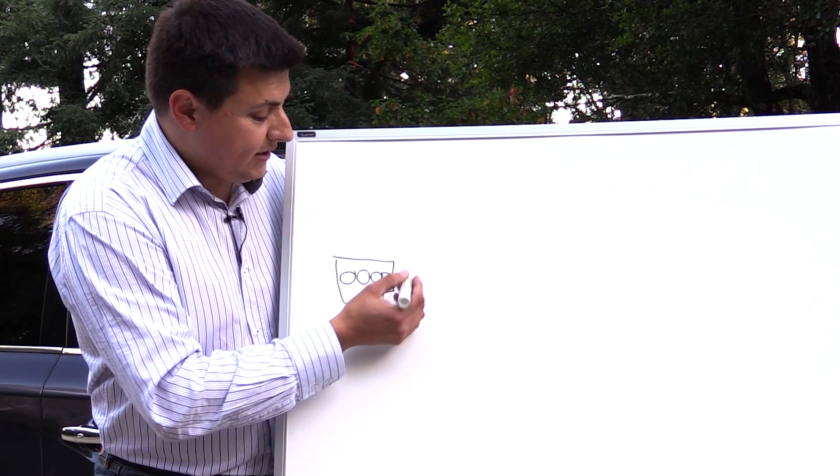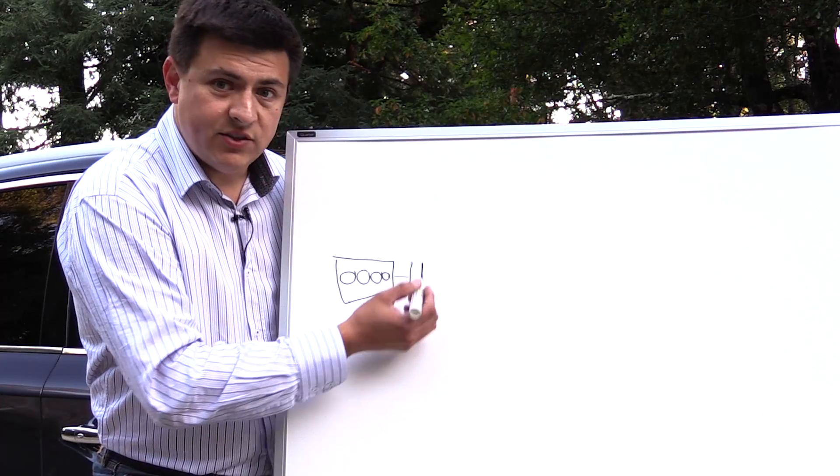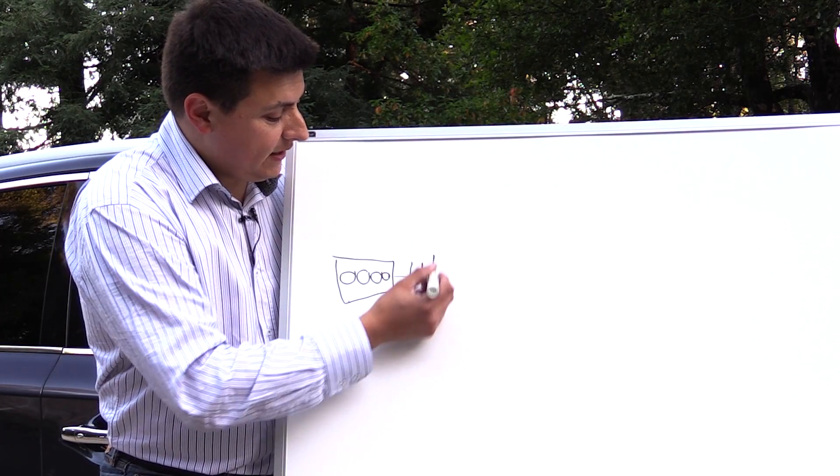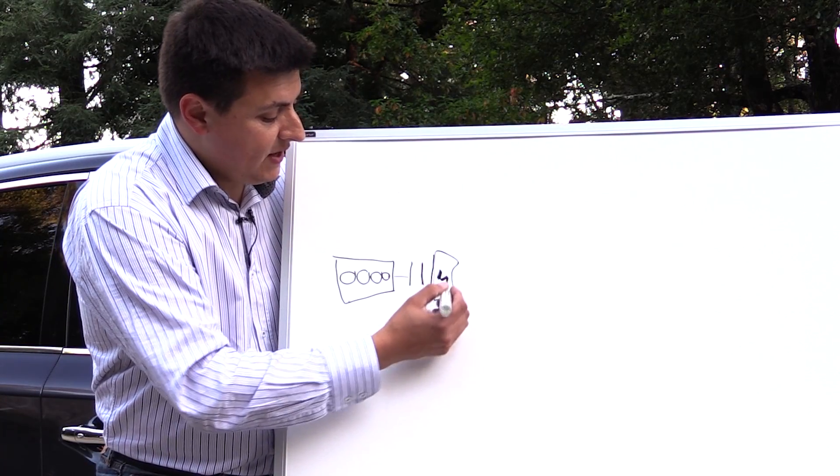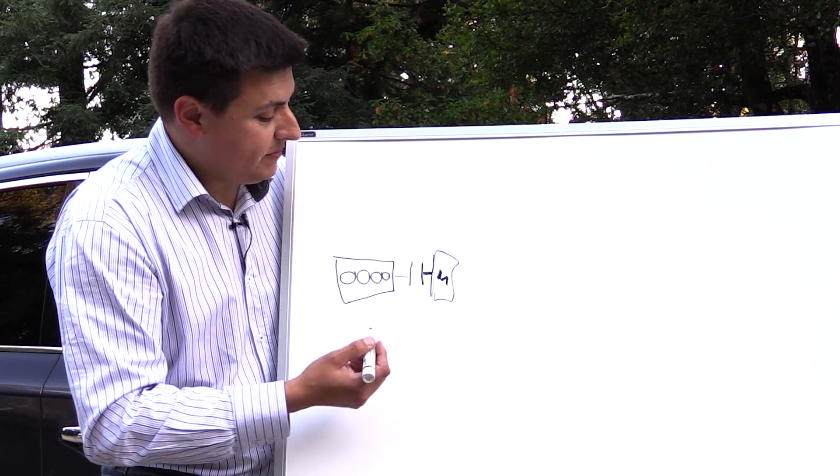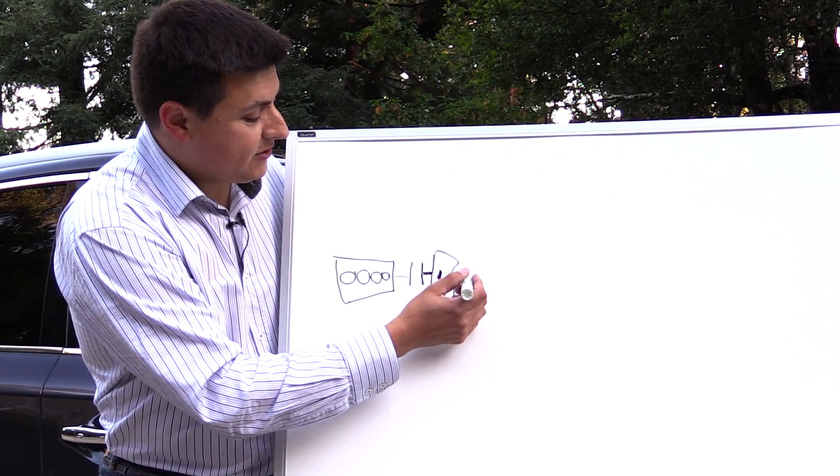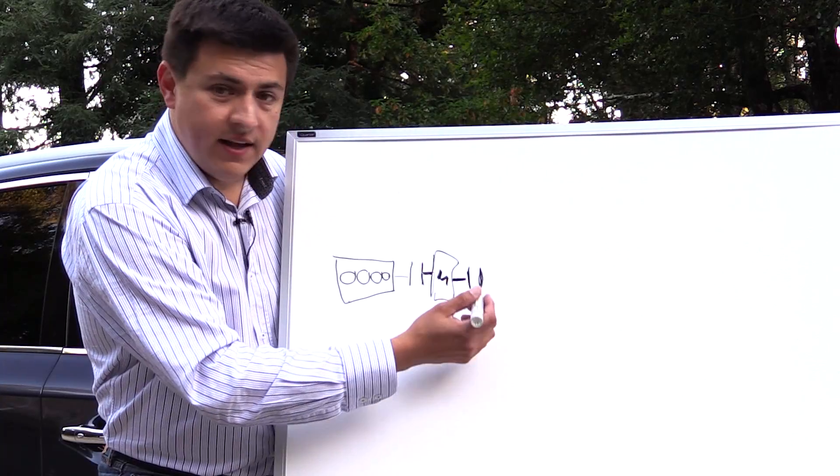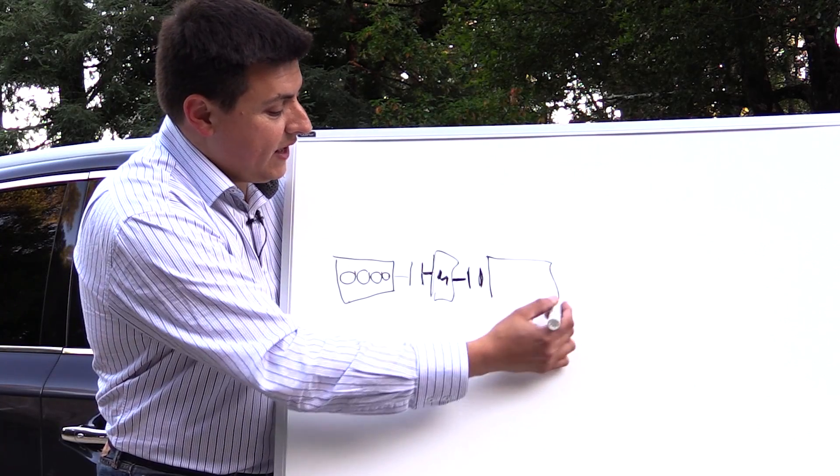Now this engine is mated via a clutch pack, so we have a clutch pack right here, to an electric motor and that electric motor sits right here. This clutch pack can engage and disengage the engine from the electric motor. On the other side of the electric motor we have another clutch pack and then on this side we have a CVT.